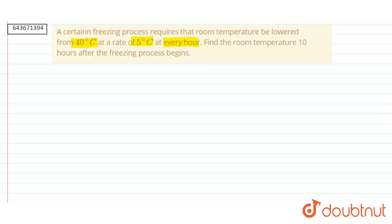Find the room temperature 10 hours after the freezing process begins. So here, our initial temperature is equals to 40 degrees Celsius.